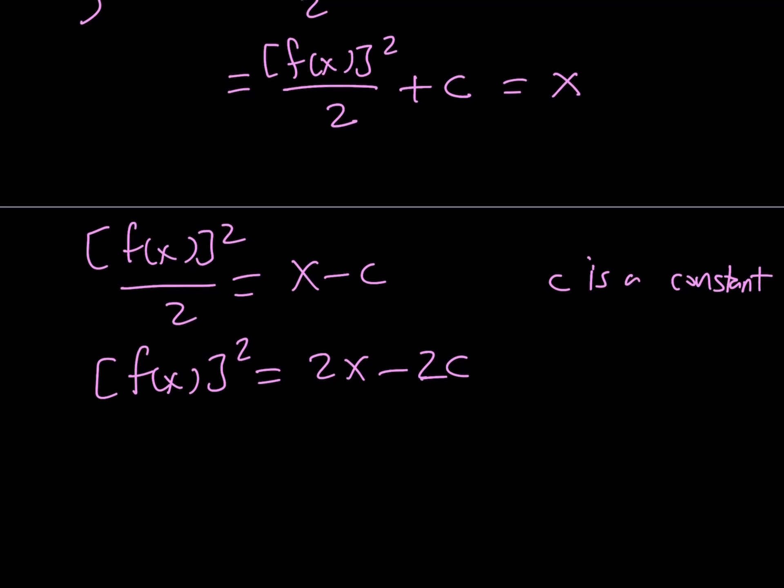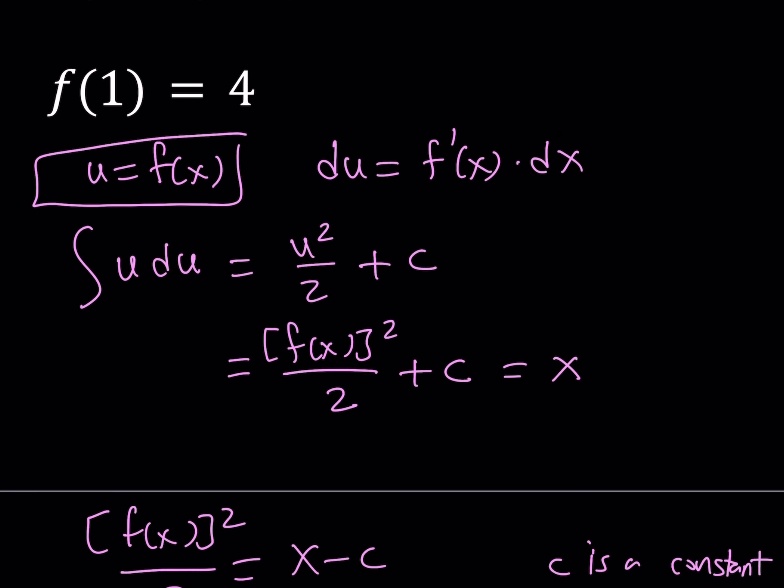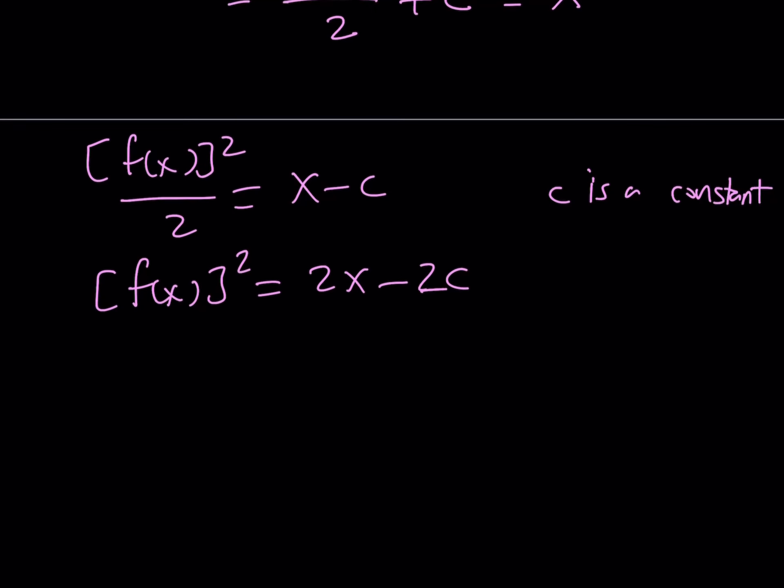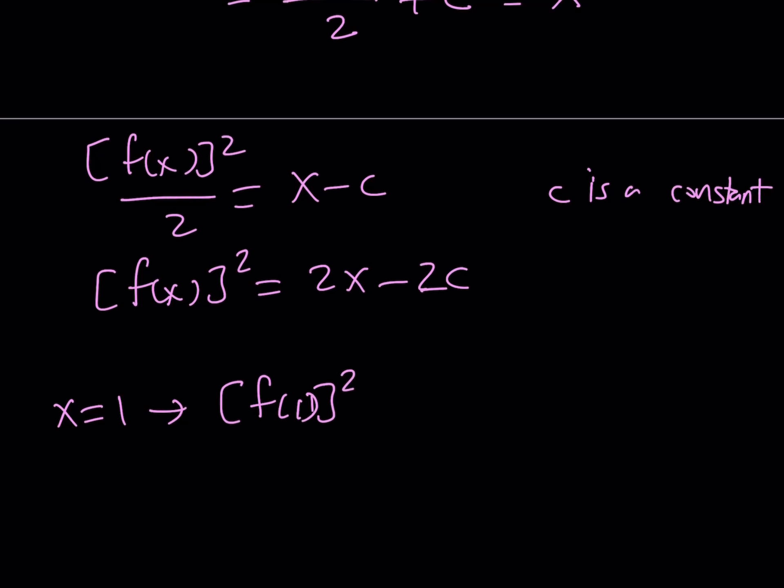Now, to solve for f of x, we do need to take the square root of both sides. But before we do that, let's go ahead and replace x with something. Because we're given that f of 1 is equal to 4. Since it's given, we can use it. So replace x with 1 on both sides. We get f of 1 squared equals 2 minus 2c.